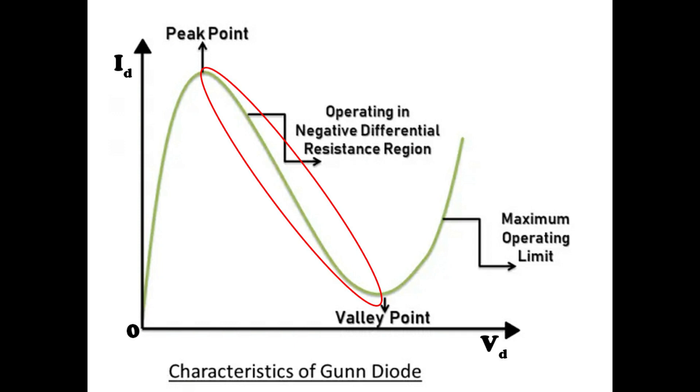The region where the current falls is termed the negative resistance region, and due to this the diode oscillates. In this negative resistance region, the diode acts as both an oscillator and an amplifier.